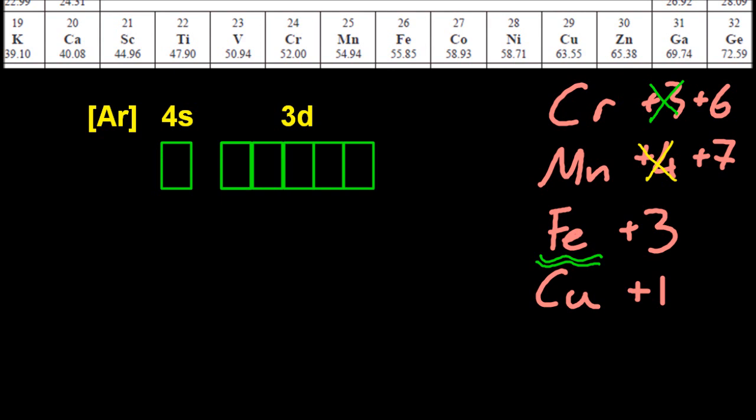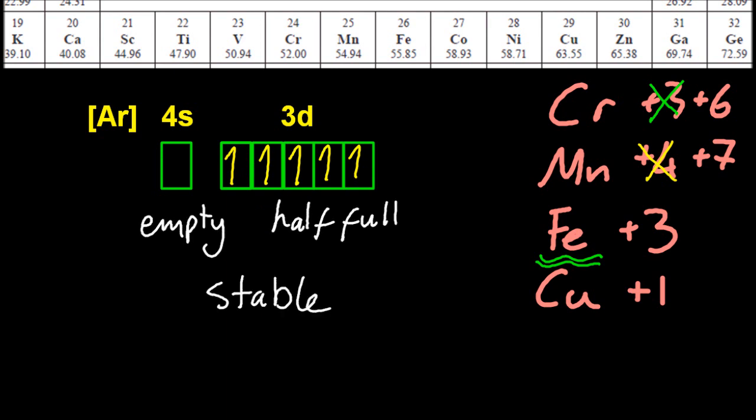Iron 3 plus, okay, this one does make sense. You might be asked why this happens. So the 3 electrons, first of all the 4S electrons go, always the 4S first. And that leaves behind a half-full d-orbital. That's stable. And the 4S is empty. That's also stable. You need to know that one.